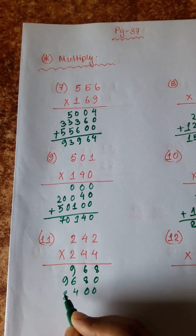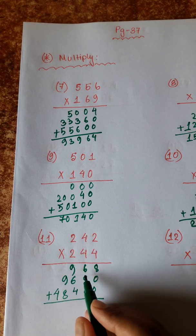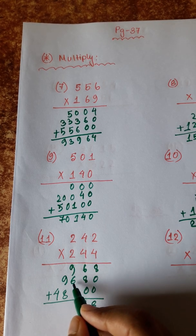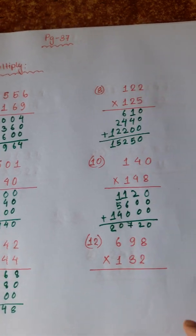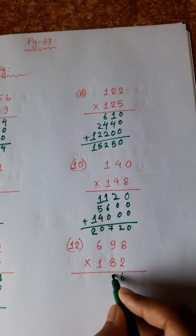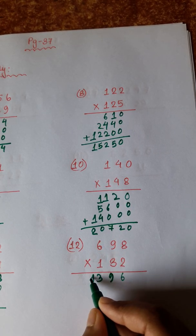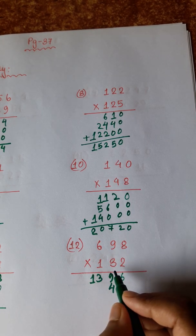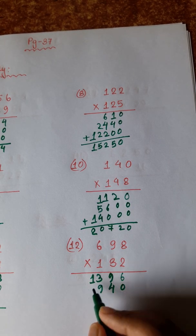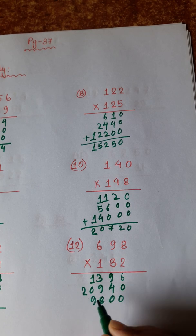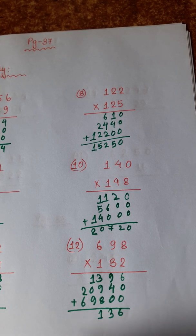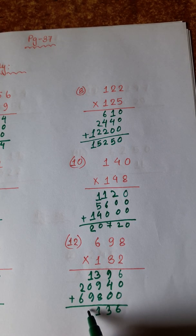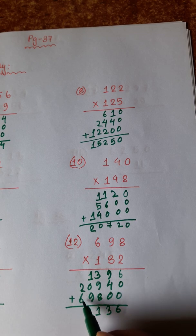2 twos are 4, 4 twos are 8, 2 twos are 4. 8, 4 — 8 plus 6, 14. 1, 4 plus 1, 5. 6 plus 5, 11 plus 9, 20. 8 plus 2, 10 plus 9, 19. 8 twos are 16, 1 — 9 plus 2, 18 plus 1, 19. 1, 6 twos are 12 plus 1, 13. 8 threes are 24, 9 threes are 27 plus 2, 29. 9 plus 2, 11 plus 1. 12, 12, 12 — 1, 6 plus 1, 7 plus 2, 9.